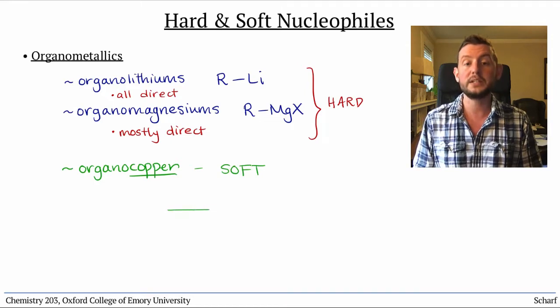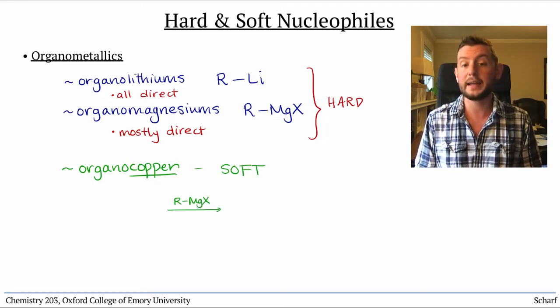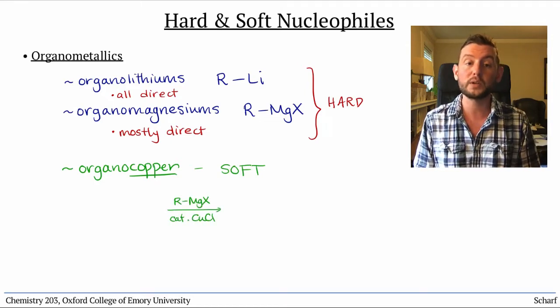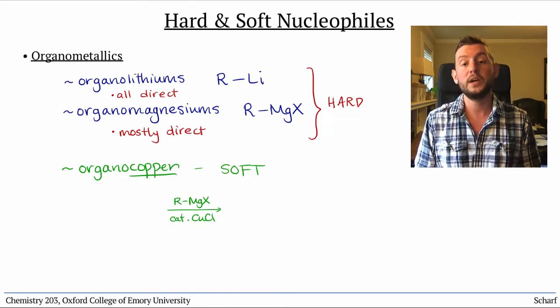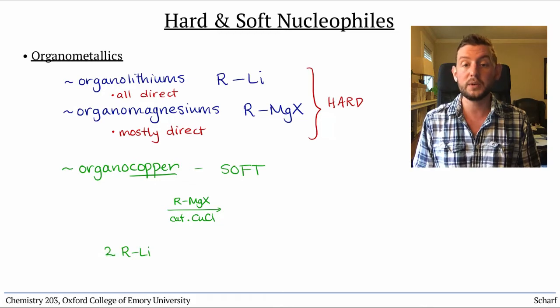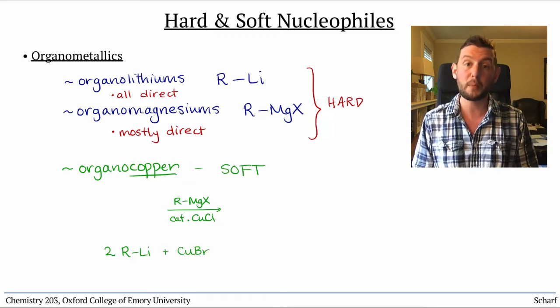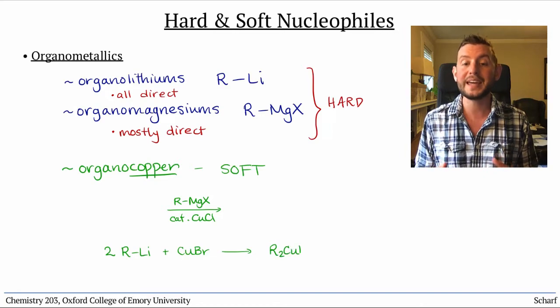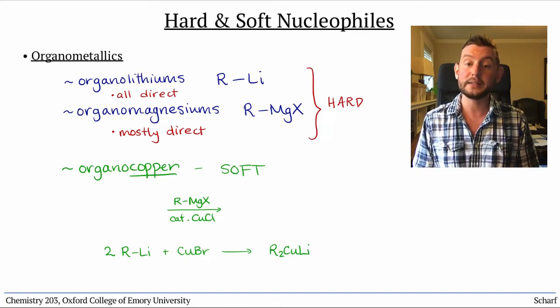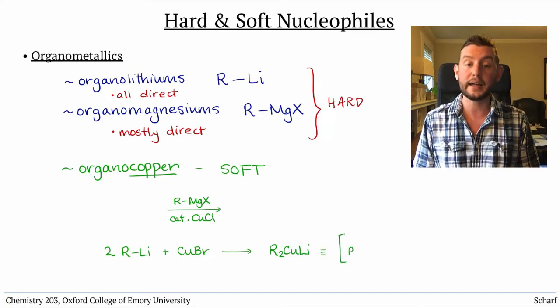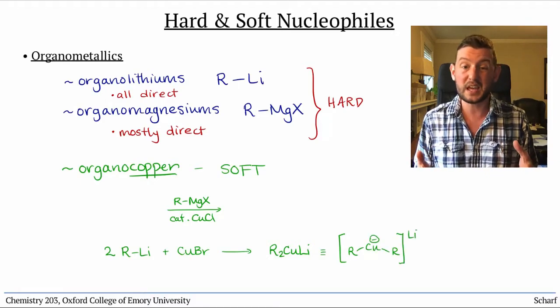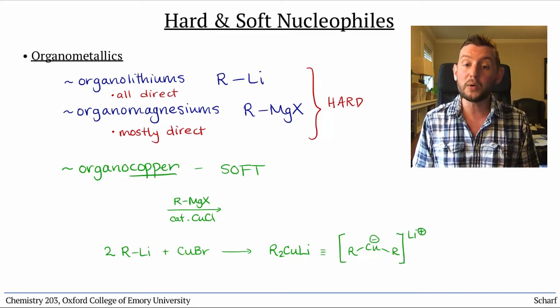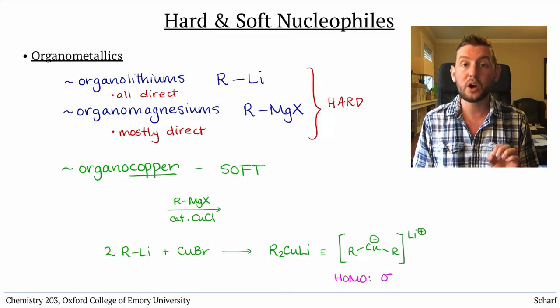These sorts of reagents can be formed either from adding catalytic amounts of copper chloride to Grignard reagents, or from the reaction of two equivalents of an alkyl lithium reagent with copper bromide. In the latter case, we produce a lithium dialkyl cuprate, R₂CuLi, which is really an ionic compound that looks more like this. Its HOMO is sigma carbon-copper.